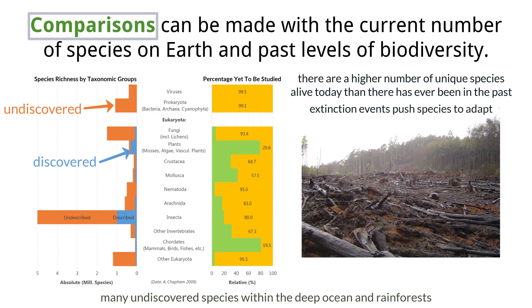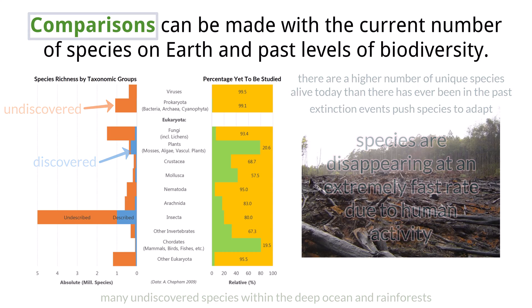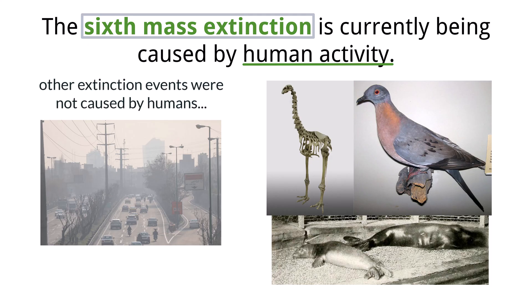However, the issue we face today isn't that current species numbers are low compared to the past, but rather the extremely fast rate at which species are disappearing due to human activities. This rapid loss is unlike the natural extinction events of the past, and is creating a significant challenge for the planet's biodiversity — marking what many scientists call the sixth mass extinction, distinct from past natural causes like asteroid impacts or massive volcanic eruptions.